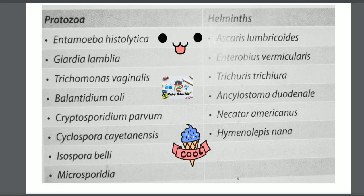These are the parasites having direct life cycles — they require no intermediate host. Among protozoa: Entamoeba histolytica, Giardia lamblia, Trichomonas vaginalis, Balantidium coli, Cryptosporidium parvum, Cyclospora cayetanensis, Isospora belli, and Microsporidia. Among helminths: Ascaris lumbricoides, Enterobius vermicularis, Trichuris trichiura, Ankylostoma duodenale, Necator americanus, and Hymenolepis nana.